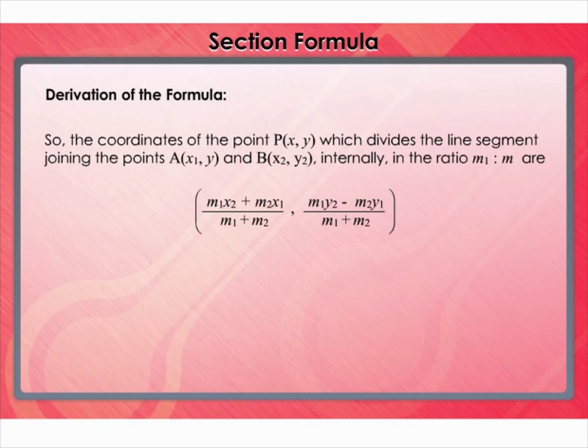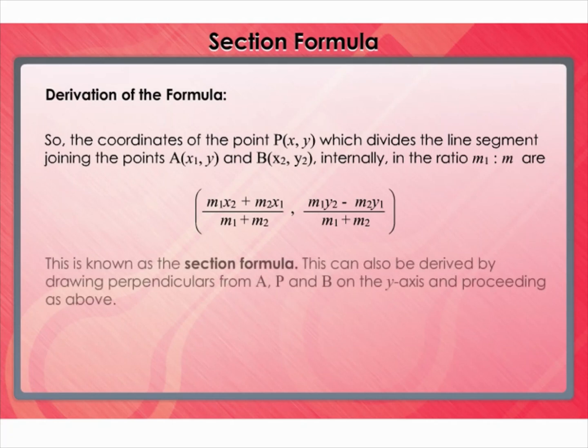internally in the ratio m₁:m₂ are given by the section formula. This can also be derived by drawing perpendiculars from A, B, and P on the y-axis and proceeding as above.